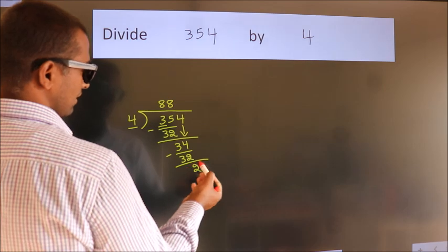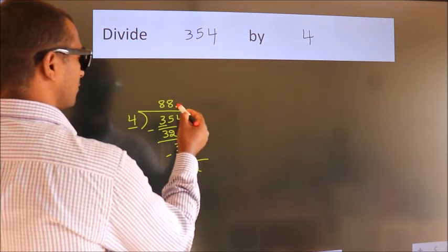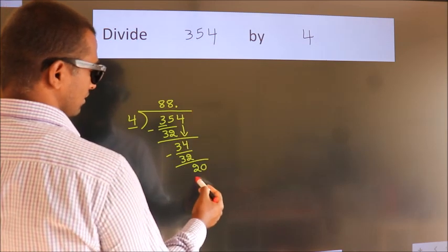After this no more numbers to bring it down. So what we do is we put dot, take 0. So 20.